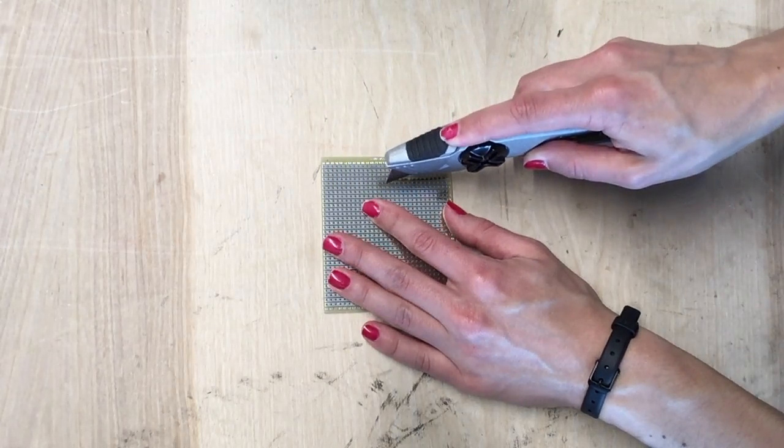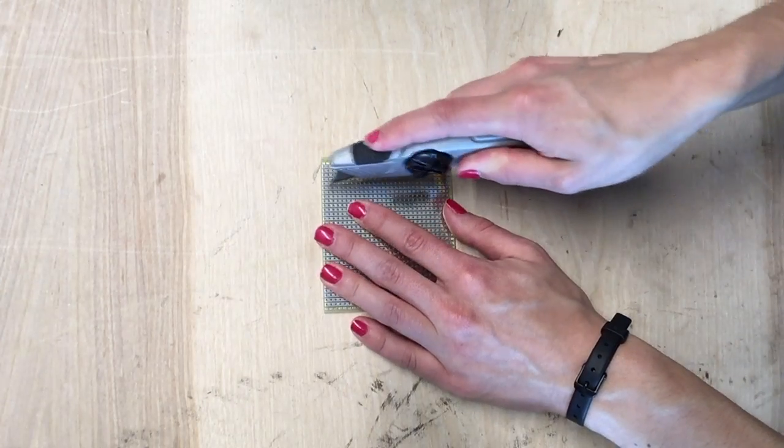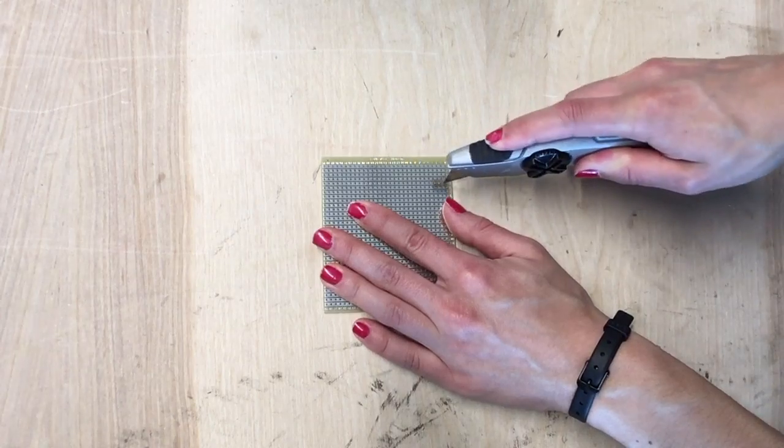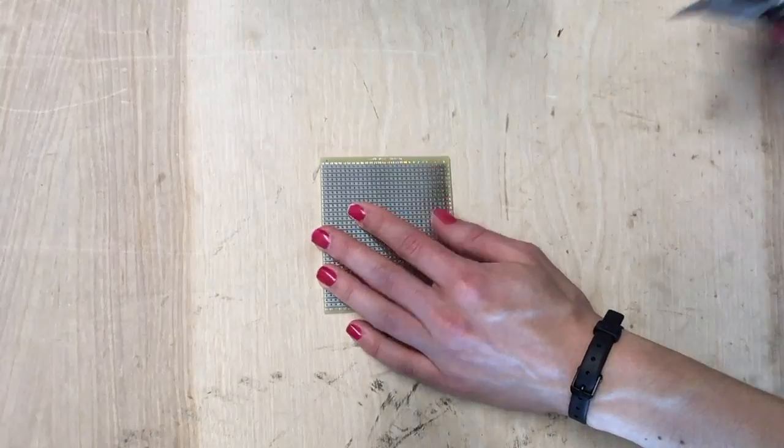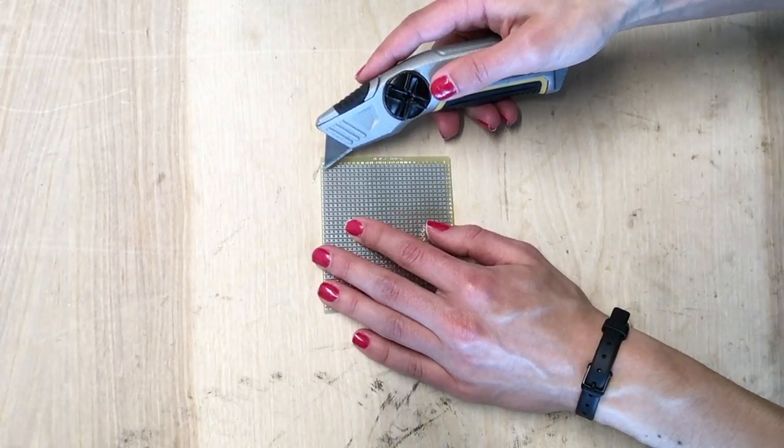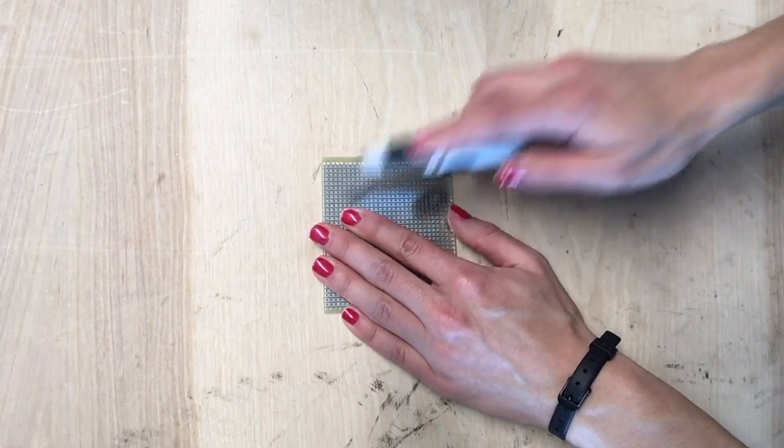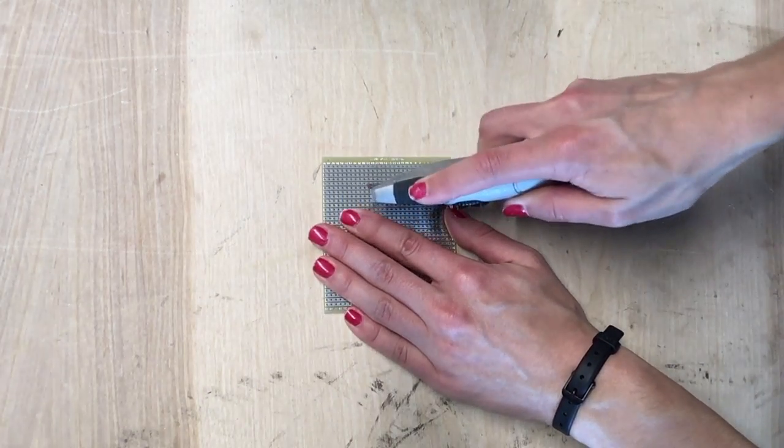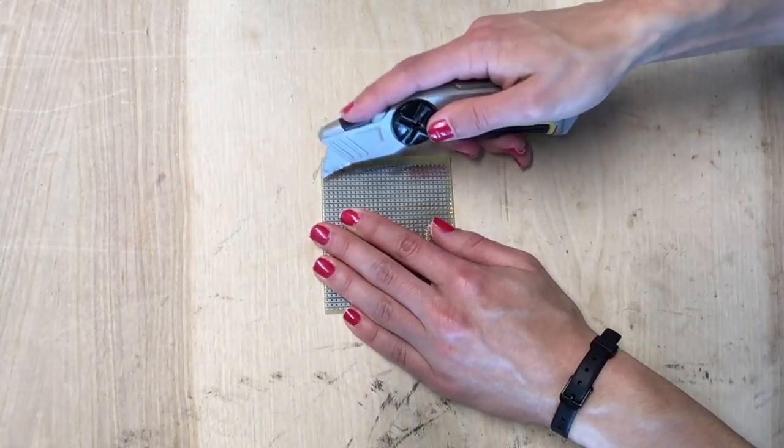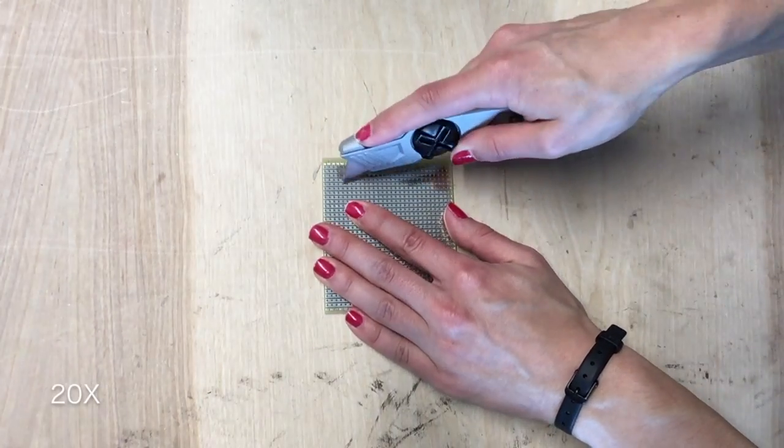After you have measured your board, start by using a blade to mark where you will want to cut. Just like this. Repeat this process more than one time until you feel a small concavity in the board. Essentially, you are marking a trail on the board corresponding to where you will exactly cut.